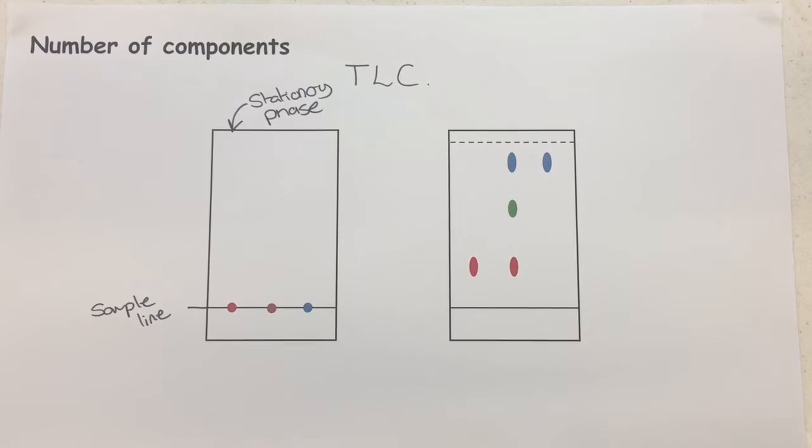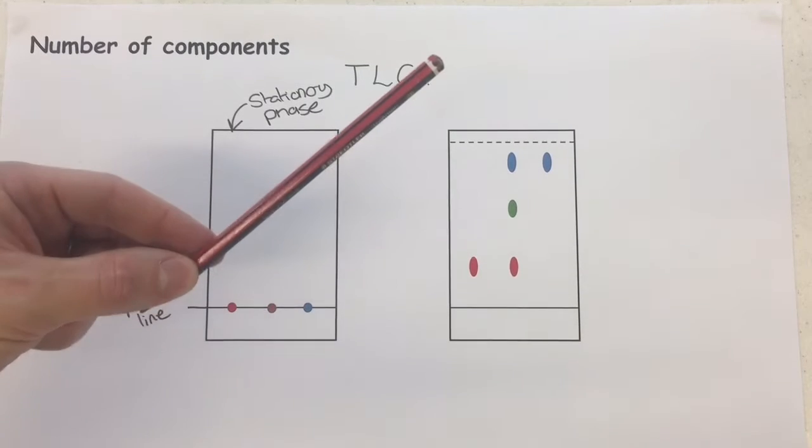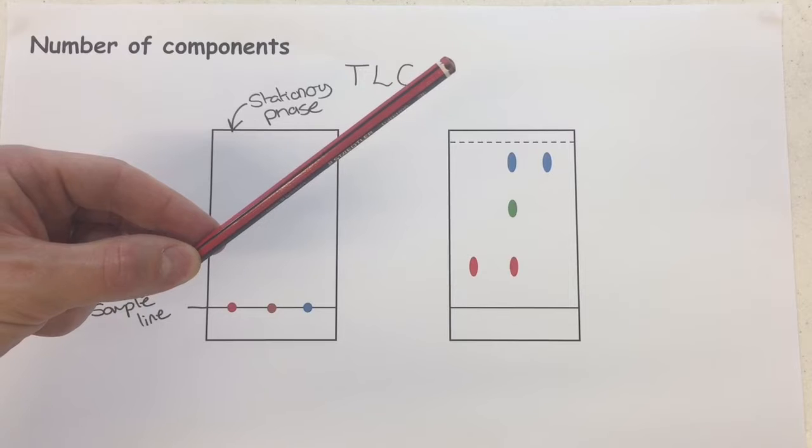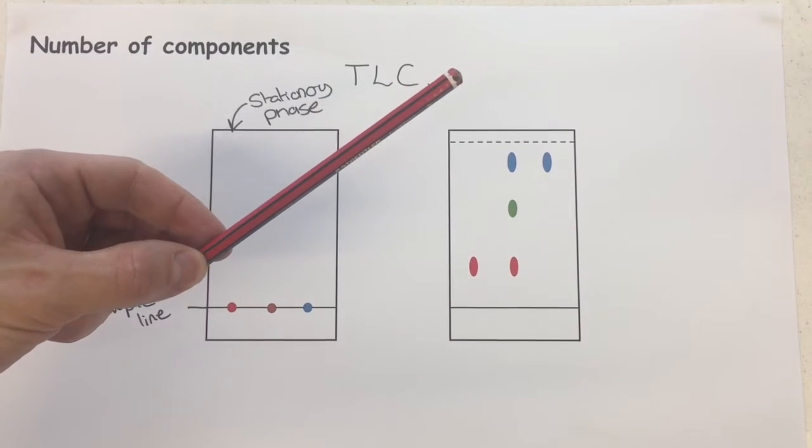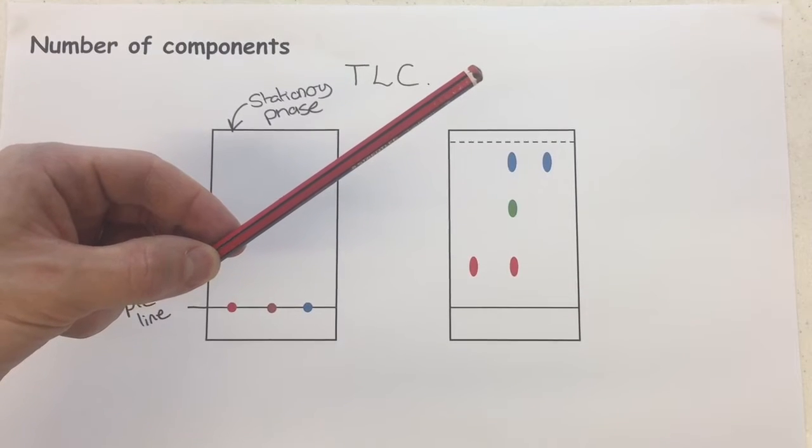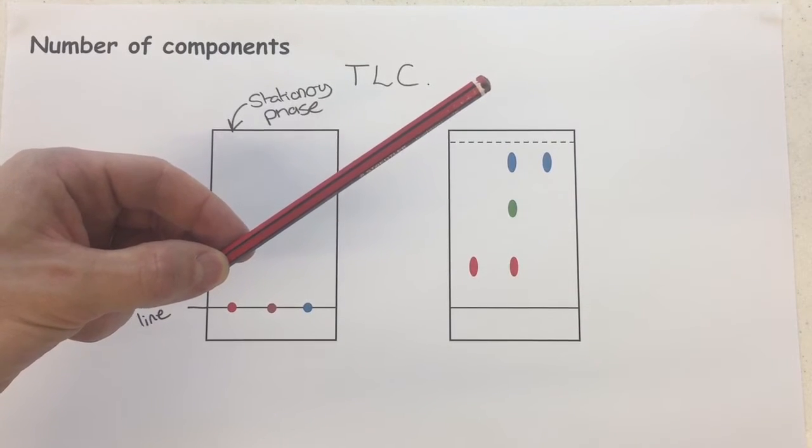Before we go any further about that sample line, you need to make sure that in real terms you would draw the sample line with a pencil. The reason is ink can contain lots of different components that could be soluble in what we're going to use here, and it can disturb the sample, so we want to make sure that we use a pencil.